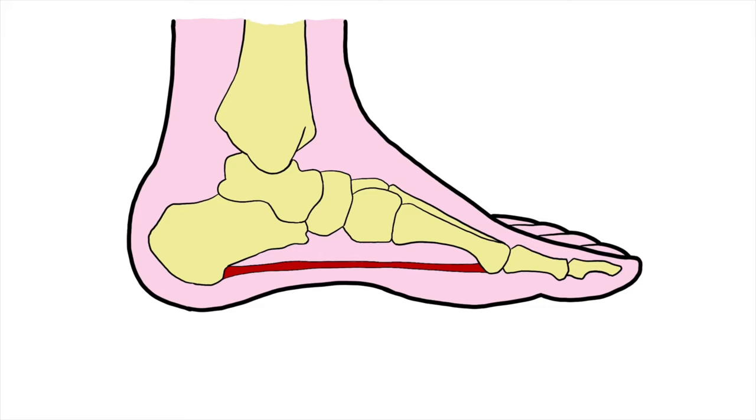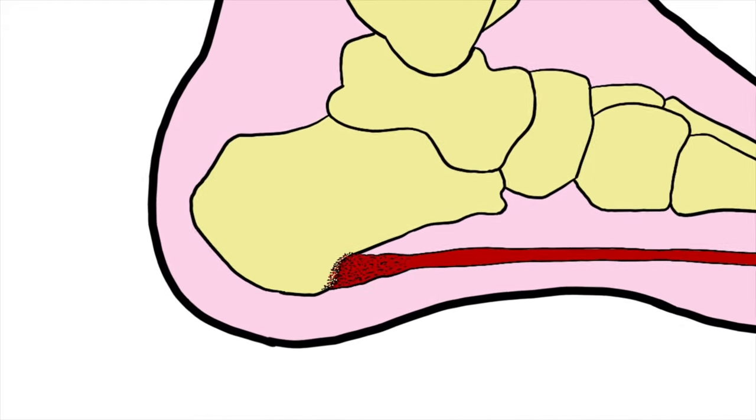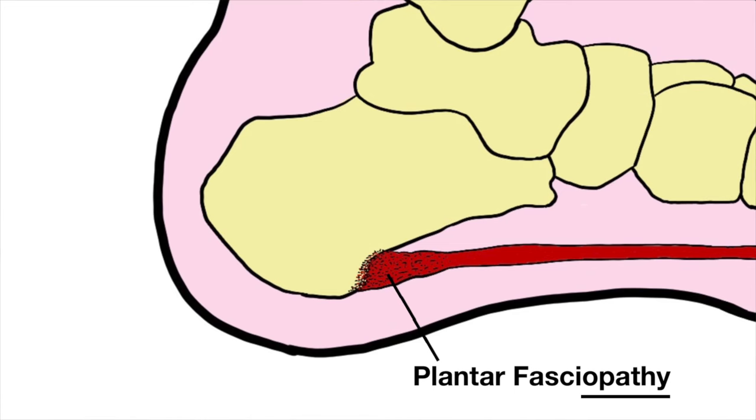The term 'itis' is derived from ancient Greek and means inflammation, so plantar fasciitis describes inflammation of the plantar fascia. But when we look at people who have the condition we don't often see true inflammation. We instead see thickening and degeneration of the fibers that make up the plantar fascia, and so the more correct term is plantar fasciopathy, as 'opathy' means degeneration. Both these terms are a bit of a mouthful, so my preference is the other common term: plantar heel pain.